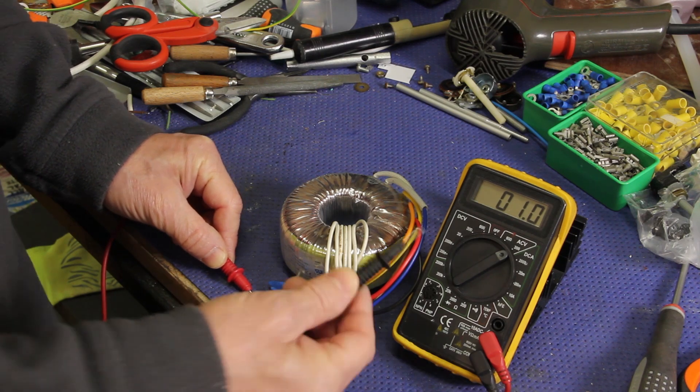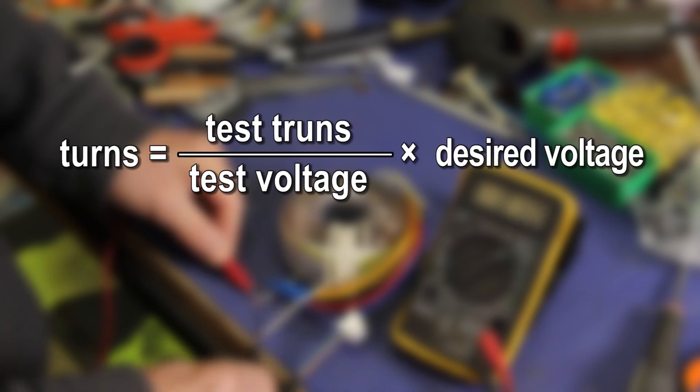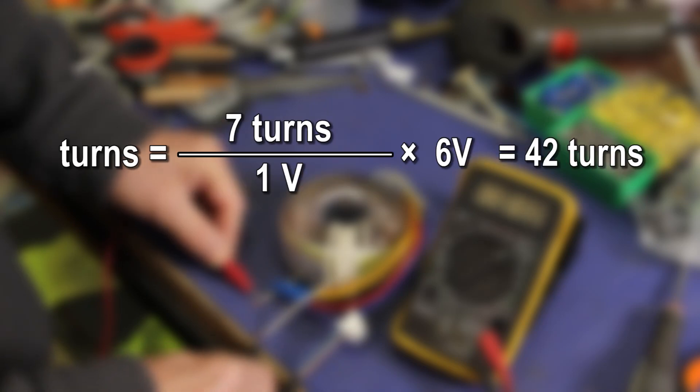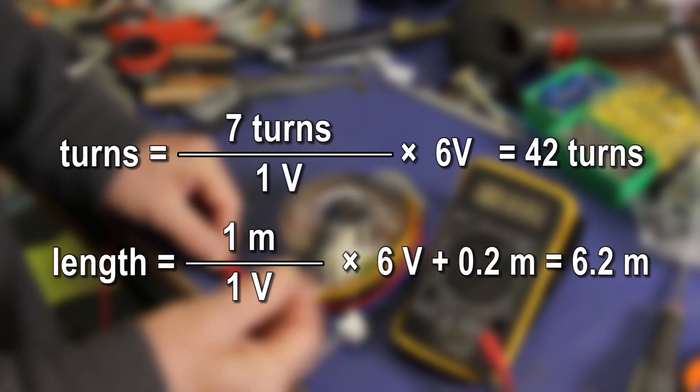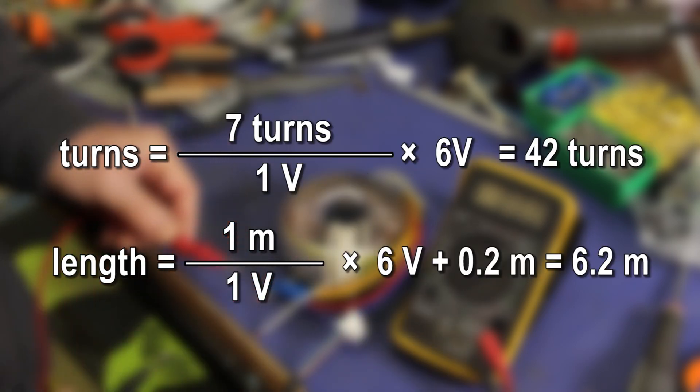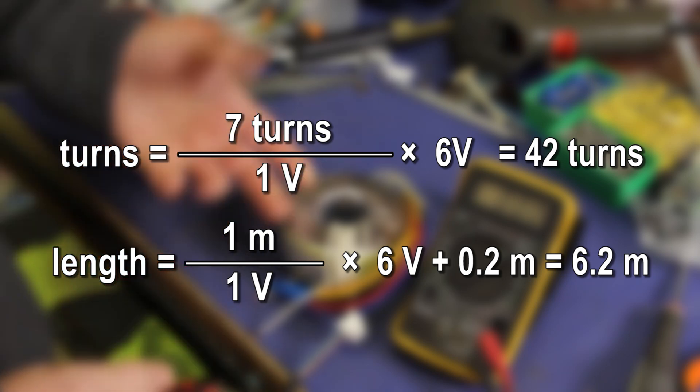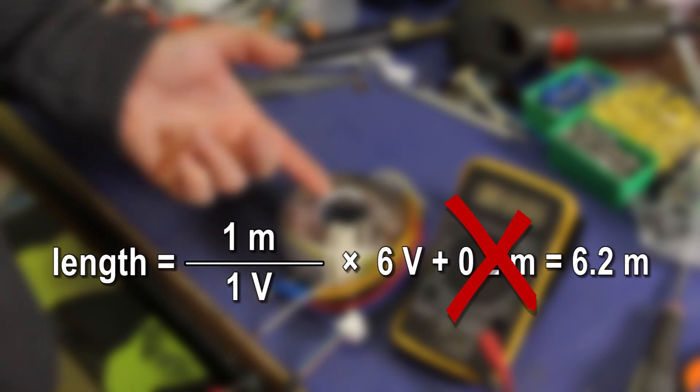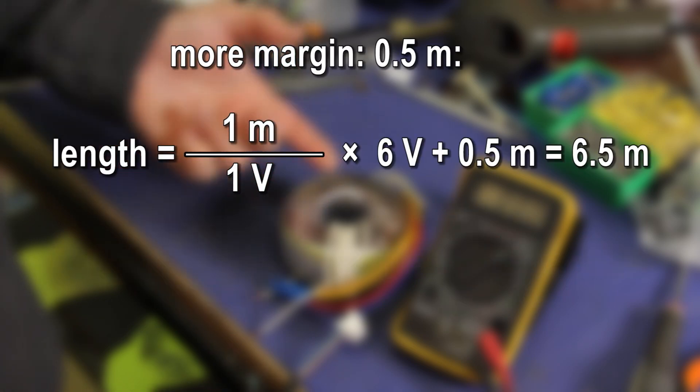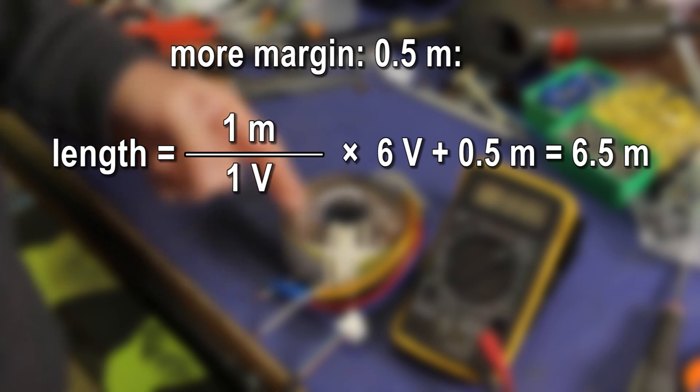So it is about one volt per meter. Now calculate the number of turns for the required voltage, in my case 42, and also calculate the required length of wire you need. So in my case I have seven turns with one volt and I want six volt, this means I need about six meters plus 10 centimeters for the terminals. However, because you know the math is rough, add some more margin to avoid running out of wire while winding.